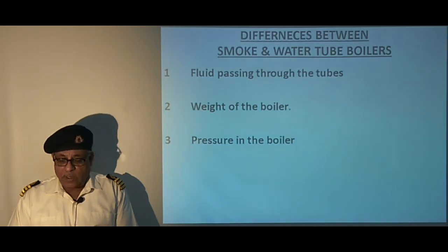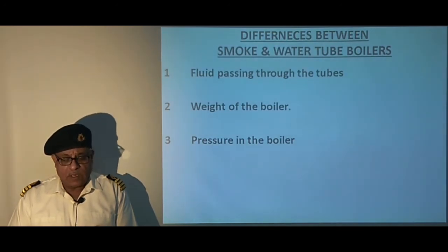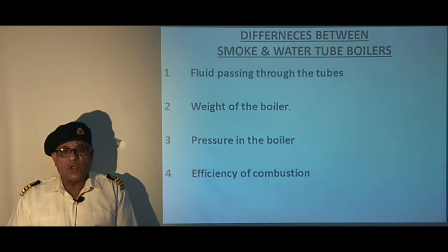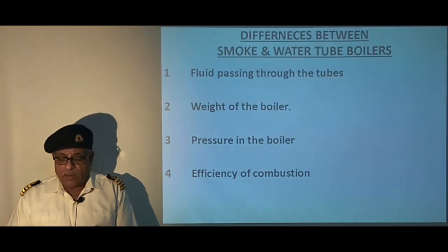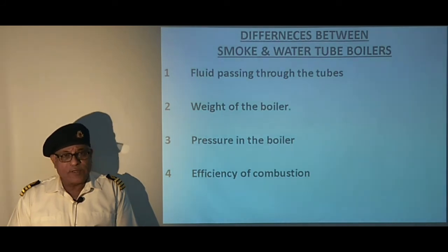Third, on the basis of pressure: smoke tube boilers are used for low and medium pressures and have low efficiency, whereas water tube boilers are used for medium and high pressure and have higher plant efficiency. Regarding efficiency of combustion, smoke tube boilers have less efficient combustion due to the restricted size of the furnace surrounded by water, as a large furnace would require more wall thickness, reducing heat transfer. Combustion in the water tube boiler is more efficient and there is no restriction on the size of the furnace.